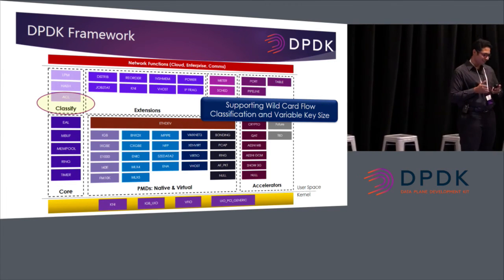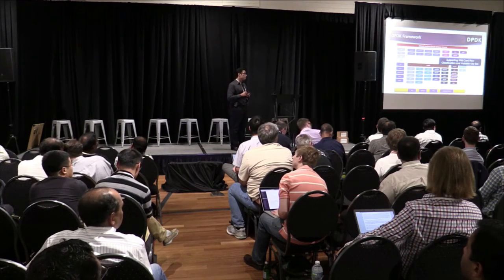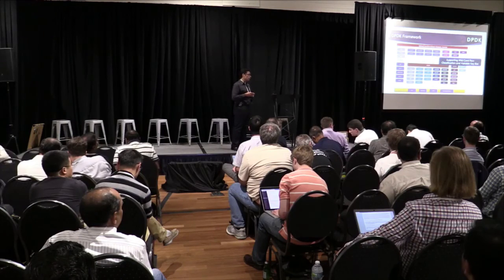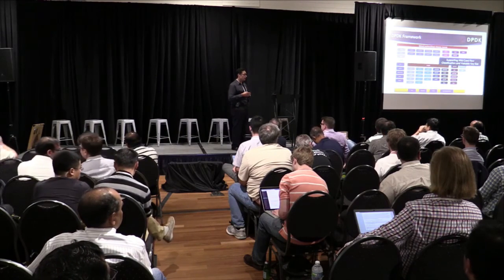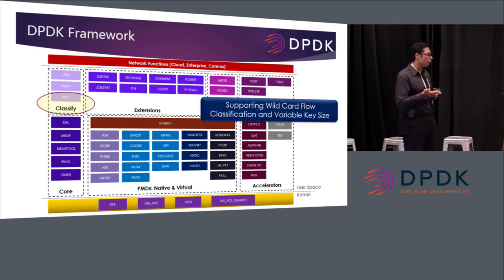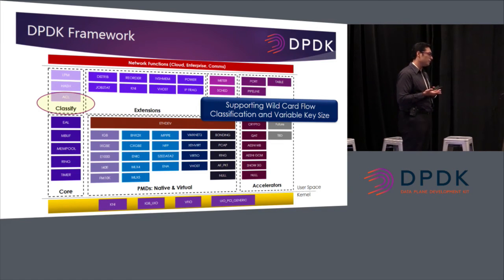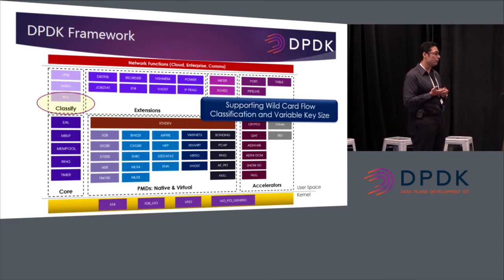Q: Why use cuckoo hashing instead of stratified trees, which can give O(log log n) search? A: Cuckoo hashing is a library for exact match. Trees and stratified trees are more suited for wildcard matching. We also have the ACL library and LPM library in DPDK for matching. With exact match, the RTE hash library is quite performant.